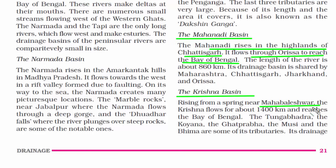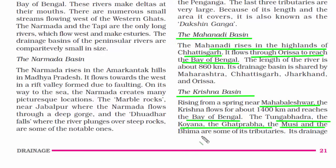Now let's read about the Krishna Basin. This river originates from Mahabaleshwar in Satara district in Maharashtra, then flows towards Karnataka, after that to Telangana and Andhra Pradesh, and finally drains into the Bay of Bengal. Some of the tributaries of this river are the Tungabhadra, the Koyna, the Ghatprabha, the Musi and the Bhima.